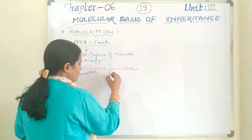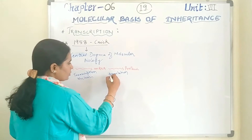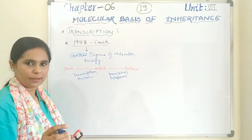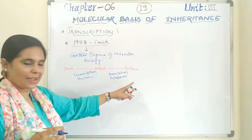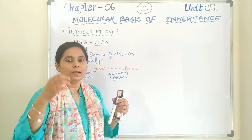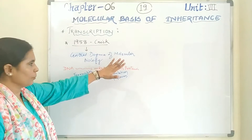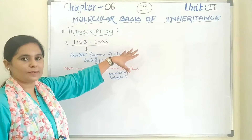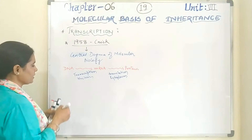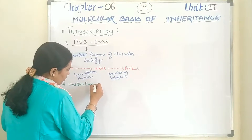Then mRNA helps in protein formation. DNA to mRNA is transcription, and mRNA to protein is translation. Transcription happens in the nucleus and translation happens in the cytoplasm. This is a very important unidirectional pathway — the central dogma of molecular biology, given by Crick in 1958.